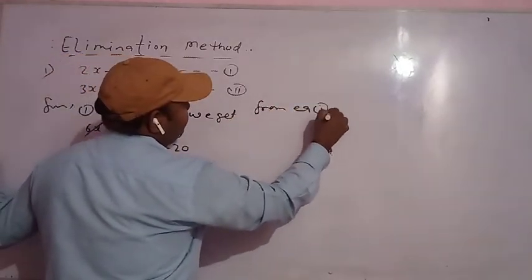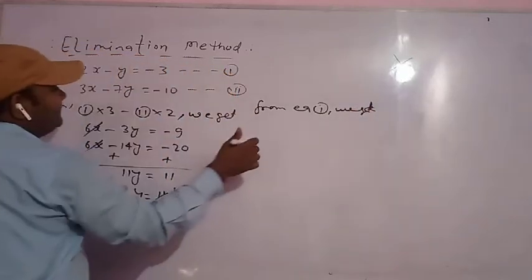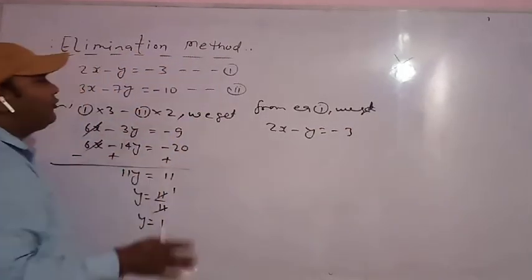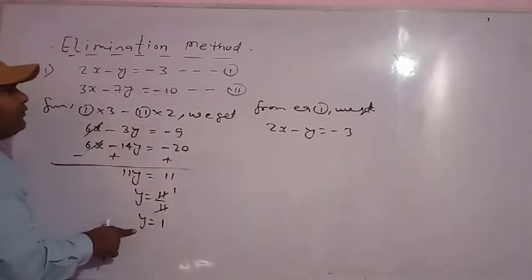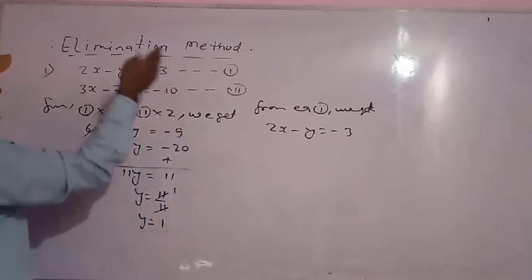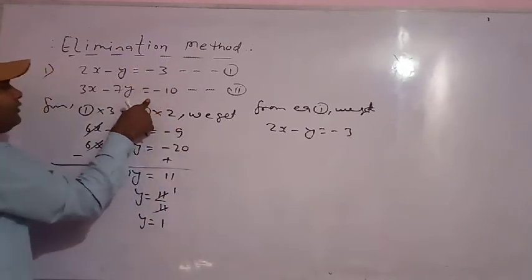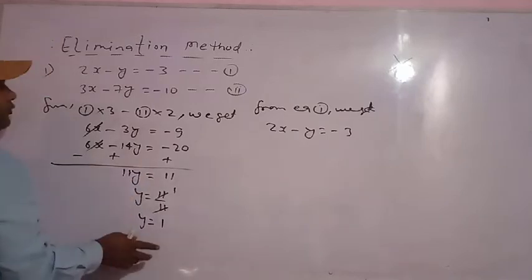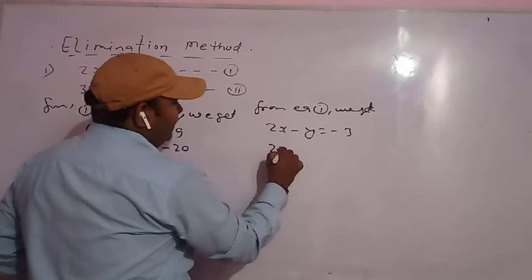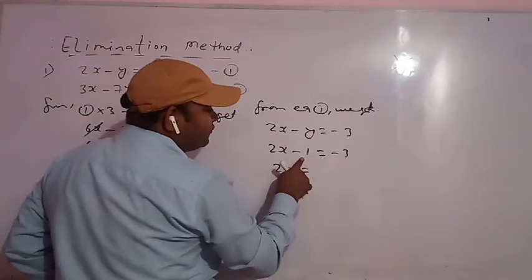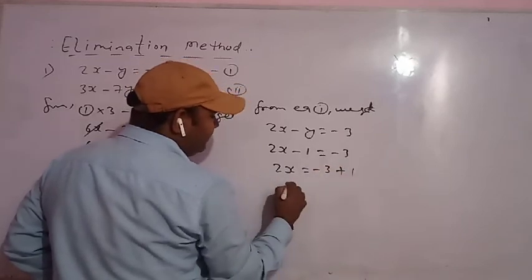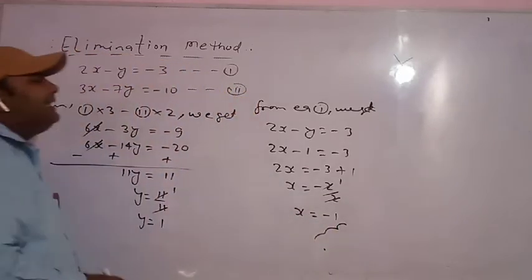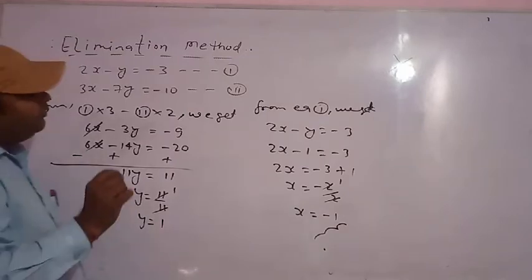From equation first, which is 2x minus 3y equals 13: put y equals 1, so 2x minus 3 times 1 equals 13. Minus 3 comes to the right side as positive: 2x equals 13 plus 3 equals 16... actually 2x minus 1 equals minus 3, so minus 3 plus 1 is minus 2, and 2 comes to the right side giving x equals minus 1. So x equals minus 1. This is the popular elimination method.